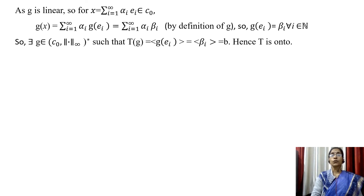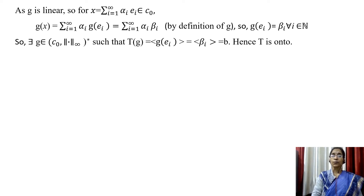Since g is linear, for x = Σᵢ₌₁^∞ αᵢeᵢ in C₀, g(x) = Σᵢ₌₁^∞ αᵢ g(eᵢ). But by definition of g, g(x) = Σᵢ₌₁^∞ αᵢβᵢ. Comparing these two expressions, g(eᵢ) = βᵢ for every i ∈ ℕ. Therefore T(g) = (g(e₁), g(e₂), ...) = (βᵢ) = b, so we have shown that T is onto.